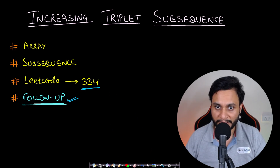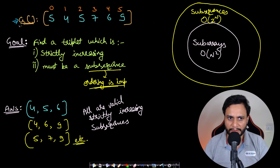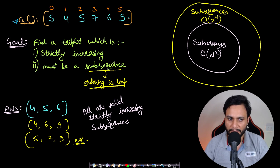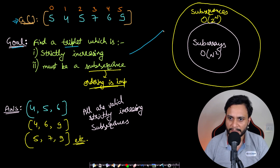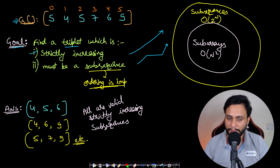Let's look at an example for better understanding. Say you are given the array 5, 4, 5, 7, 6, 9. Our goal is to find a strictly increasing triplet. By strictly increasing we mean a strictly increasing curve — not a non-decreasing curve. Strictly increasing means no two elements in the sequence can be equal.